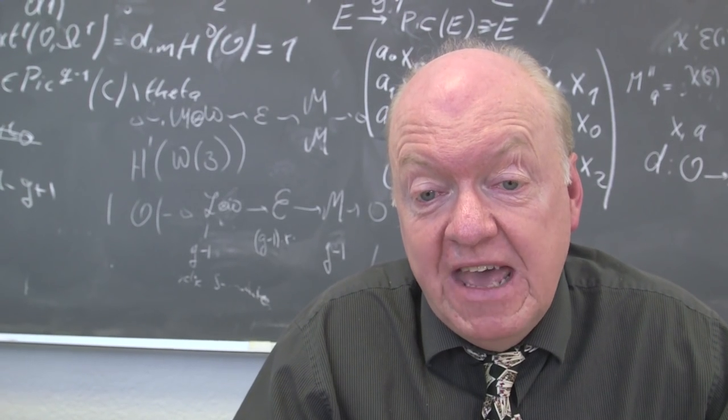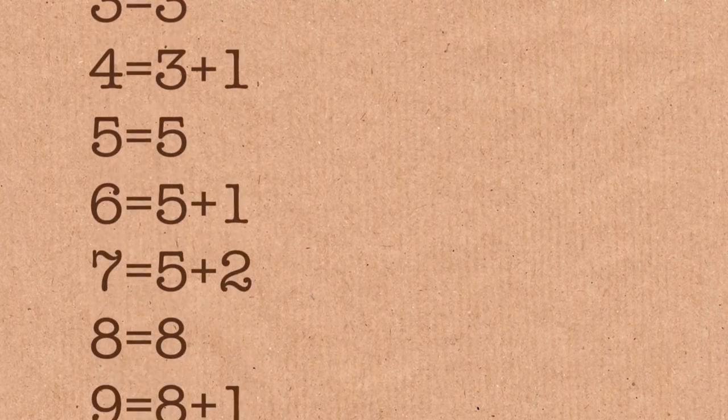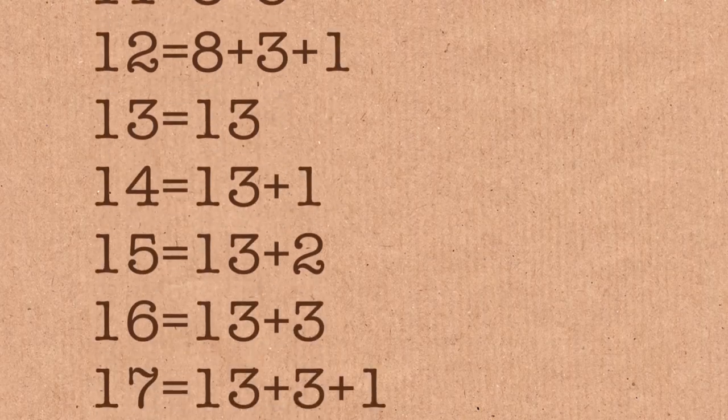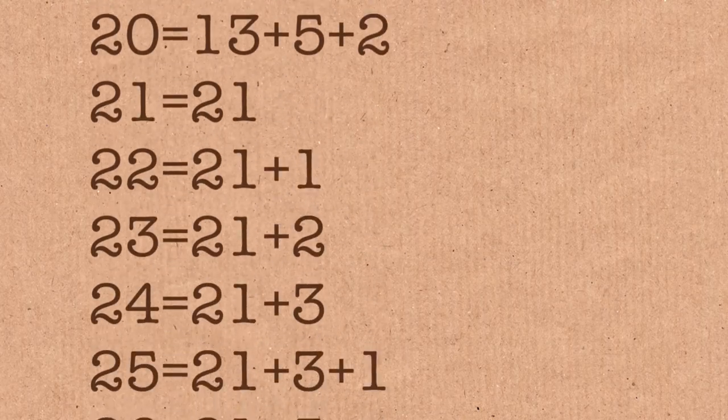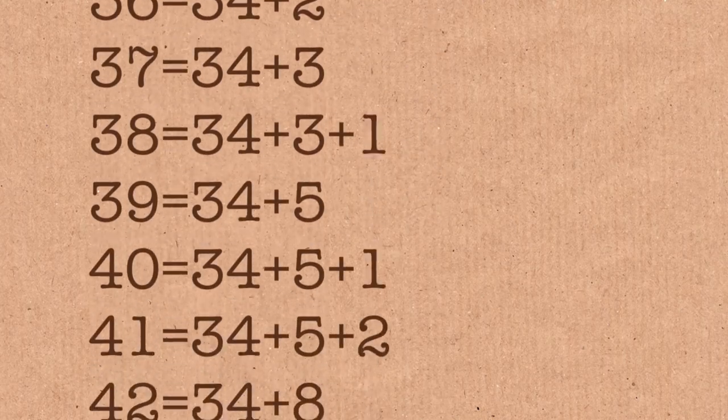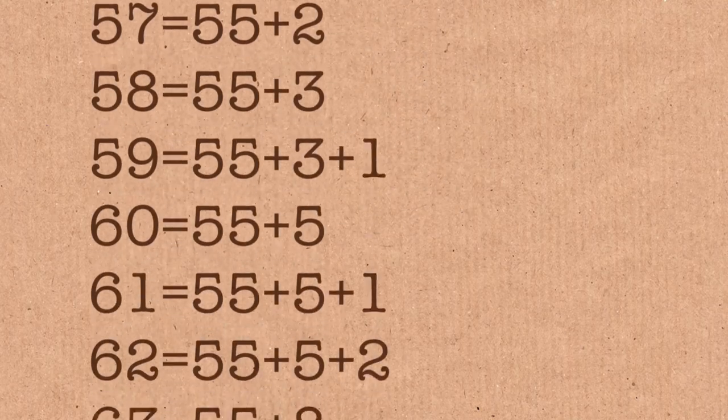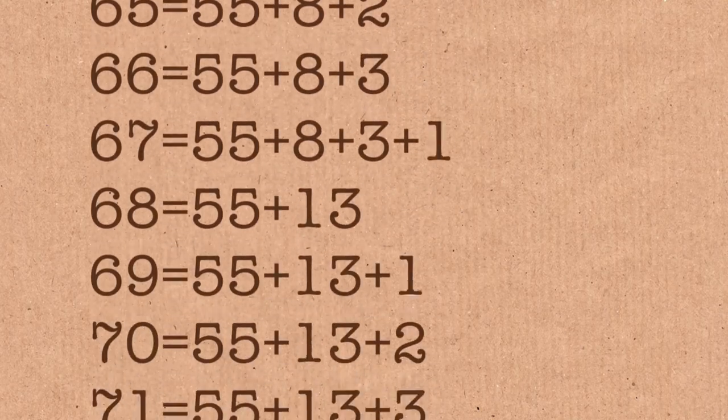And that says that every positive whole number can be uniquely written as a sum of Fibonacci numbers under two conditions. You don't use any Fibonacci number twice, and you don't use two adjacent consecutive Fibonacci numbers. And it's really the analogue of the theorem for multiplication that says that every number is uniquely expressible as a product of primes.